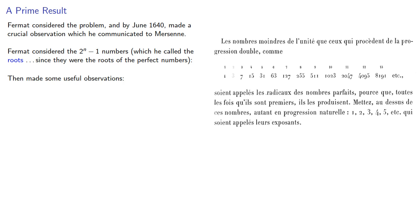The first of Fermat's observations is that if the exponent is composite, so is the root. For example, the exponent n = 6 is composite, and the corresponding root, 2^6 - 1 = 63, is composite.